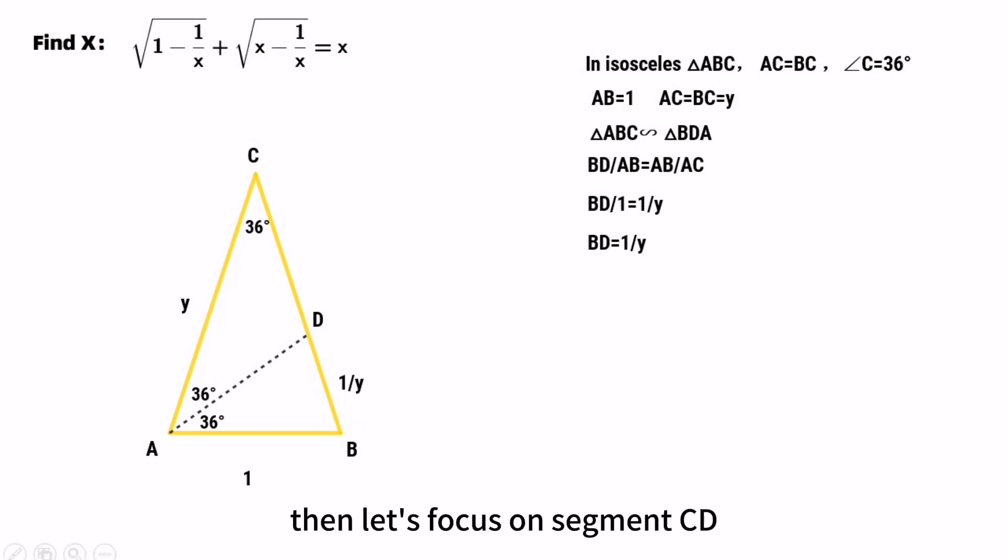Then let's focus on segment CD. CD equals BC minus BD, which equals Y minus 1 over Y.